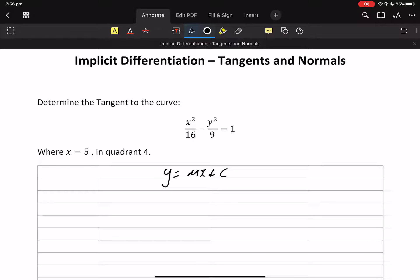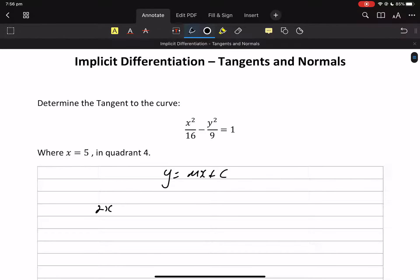Okay, 2x on 16 is just going to be, that's going well so far, x on 8. Let's write it like that. Minus 2 ninths y dy dx.